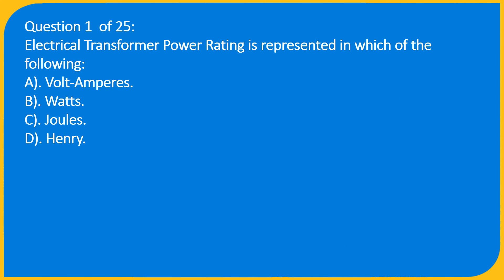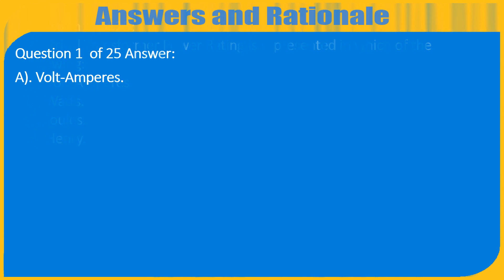Question 1 of 25: Electrical Transformer Power Rating is represented in which of the following? A. Volt Amperes, B. Watts, C. Joules, D. Henry. Answer: A. Volt Amperes.